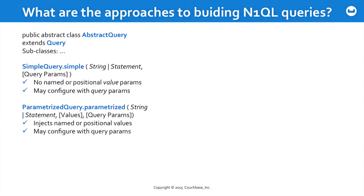If you do want to inject values into a query, then you would use a ParameterizedQuery. It has a factory method that also takes a string or a statement, but it also takes usually a JSON array of values that are then injected either by name or by position — you have a choice. It also accepts query parameters to modify the behavior of this query on the server.